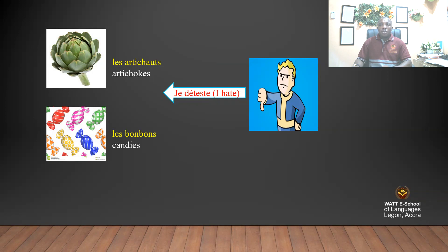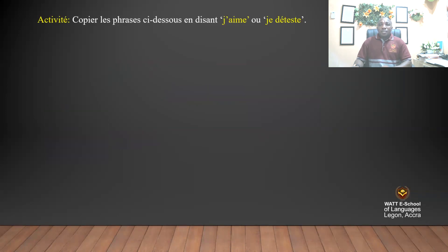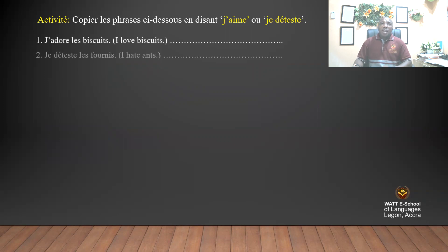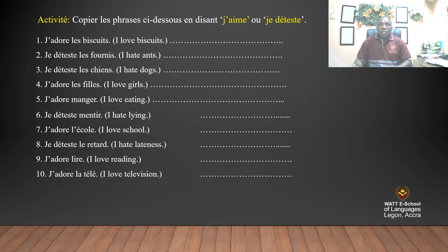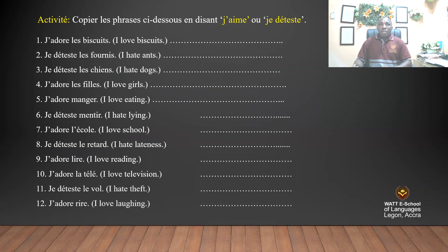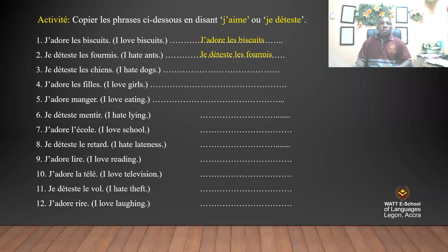Activity: Copier les phrases suivantes en disant j'adore ou je déteste — Copy the sentences below by saying 'I like' or 'I hate.' J'adore les biscuits — I love biscuits. Je déteste les fourmis — I hate ants. Je déteste les chiens — I hate dogs.